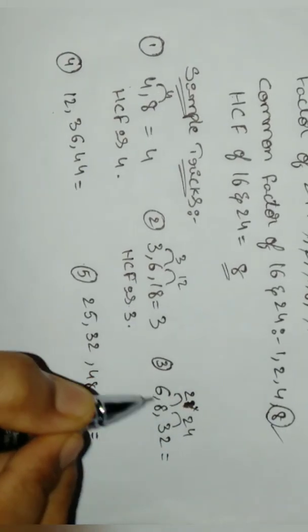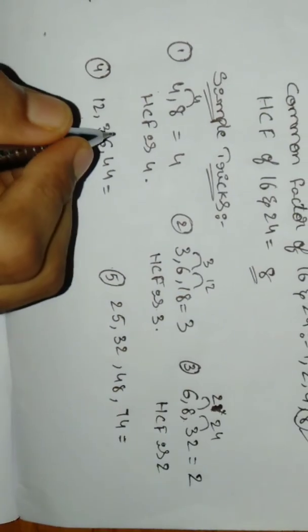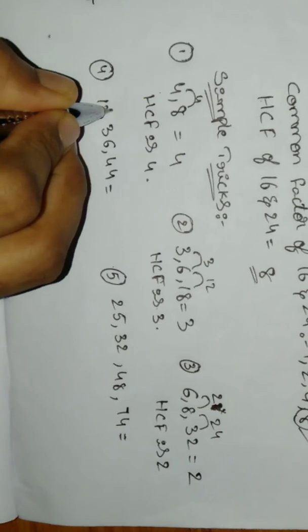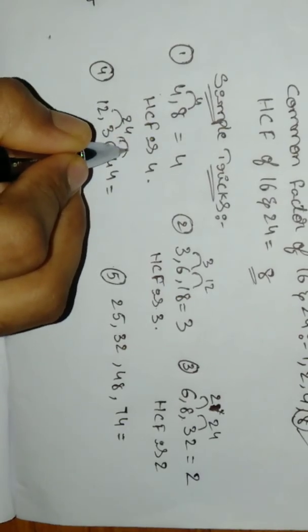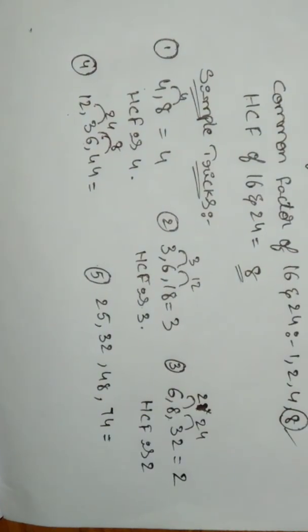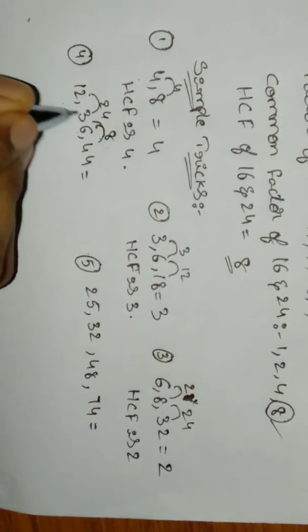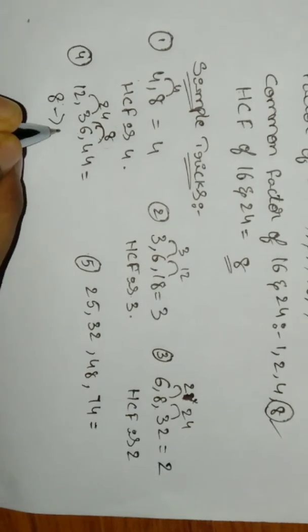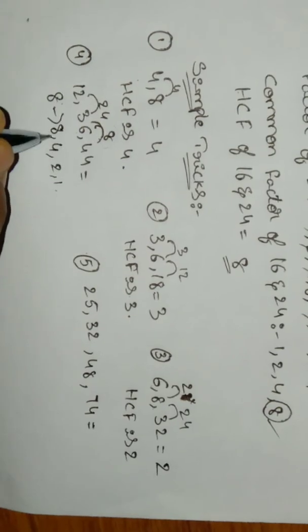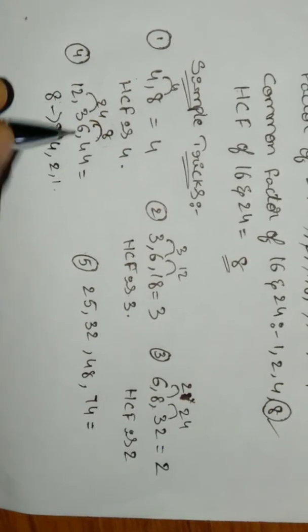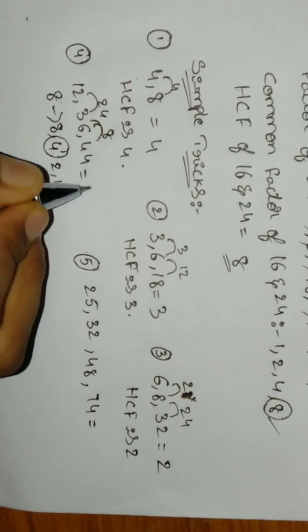Next one: 12, 36, 44. We need the least number, we need to choose factors. 8 and 12, 36, 44. The factors are 8, 4, 2, 1. So 12, 36, 44 divided by 4. So we choose 4. 4 is the HCF. Here, HCF is 4.